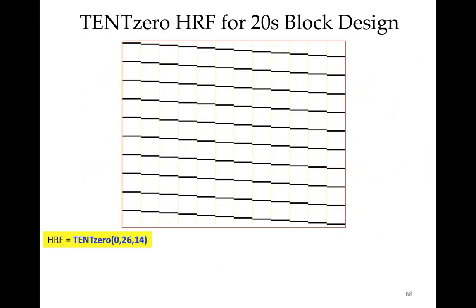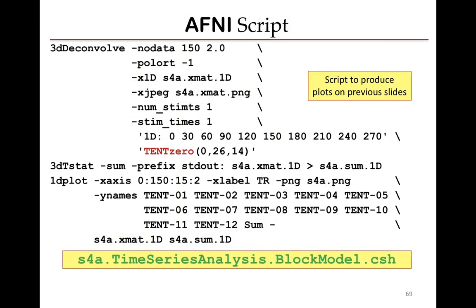The same time series, presented as a matrix image like in the previous talk, shows each column as one regressor in time. The 12 columns correspond to 12 different tent functions, shifting slightly diagonally down in time. These graphs were produced with a script available for download from the AFNI website.